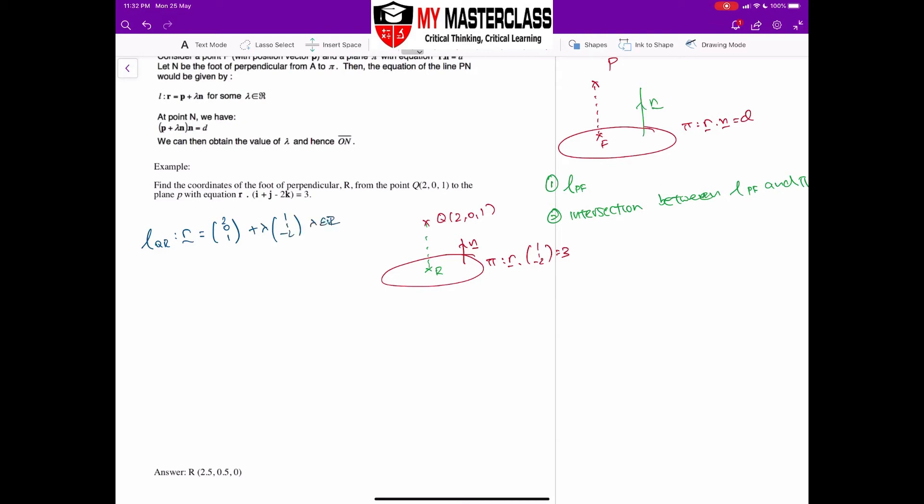To find the intersection between line and plane, first thing first, I will say that since R lies on the line, OR will then be equal to (2+λ, λ, 1-2λ), for some λ is real number.